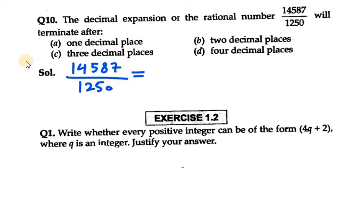we get the answer as 14587 over 5 raised to power 4 into 2. Now, how to solve it in an easy manner is, what you need to do is, you need to make here 5 raised to power 4 and 2 raised to power 4.